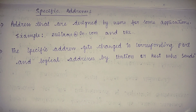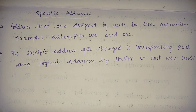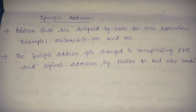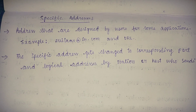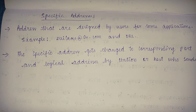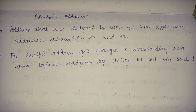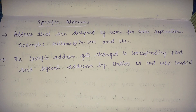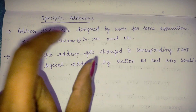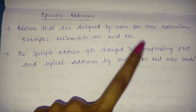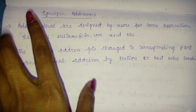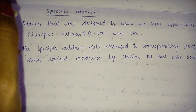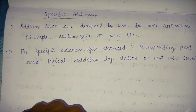The specific address is designed by users for some applications — for example, an email address like name@domain.com and a URL. The specific address gets changed to corresponding port and logical addresses by the station or host who sends it.